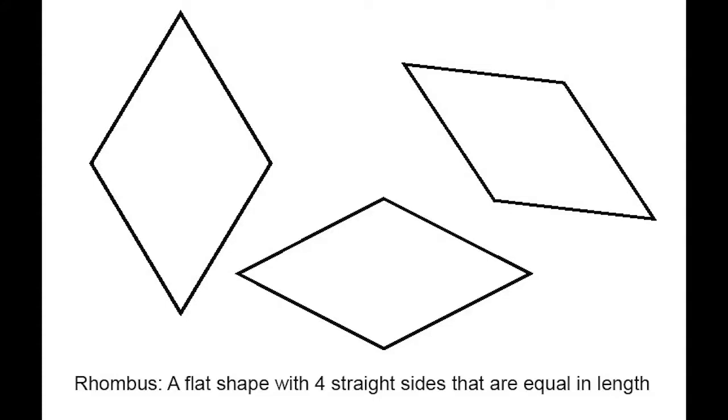So what's a rhombus and what's a tessellation? A rhombus is a flat shape with four straight sides that are equal in length. A square is also a rhombus, but for this project we're going to be using this shape, which is also called a diamond.